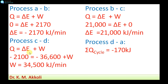For process C-D, applying the first law: Q equals delta E plus W. Q is minus 2100 and delta E is given as minus 36,600. Solving for W, after calculation we get W equals 34,500 kilojoules per minute.